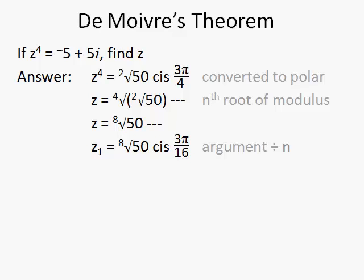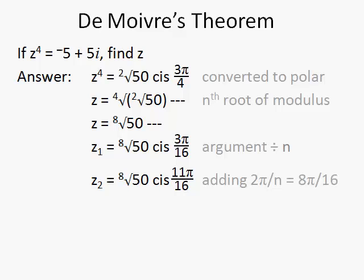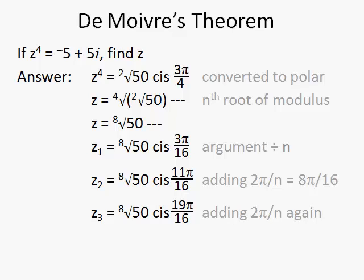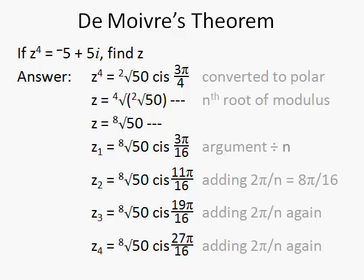But we need to find the three others. It's to the power of 4, so there will be four distinct solutions. We add 2π over n, and since we're dealing with sixteenths, we're adding 8π over 16 each time. So: 3π over 16; adding 8π over 16 gives 11π over 16; once more gives 19π over 16; and again 27π over 16. There are four distinct solutions that are all valid and must all be listed in the answers.